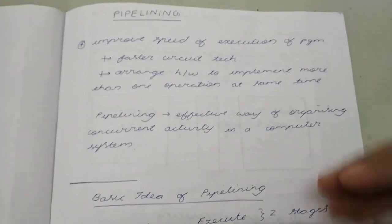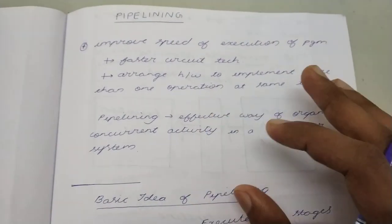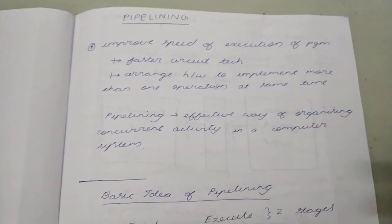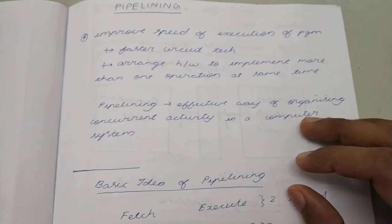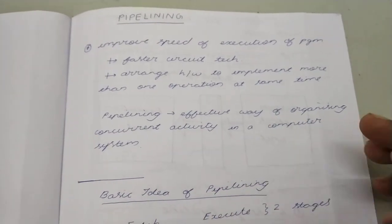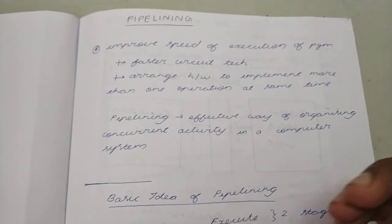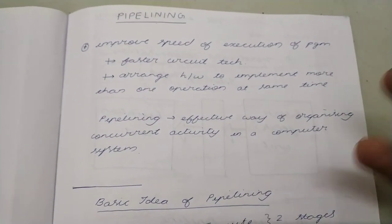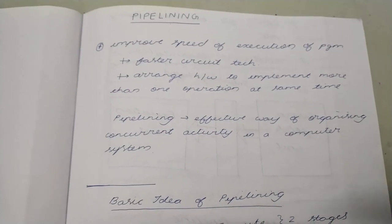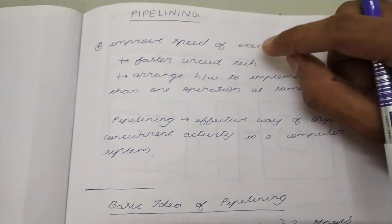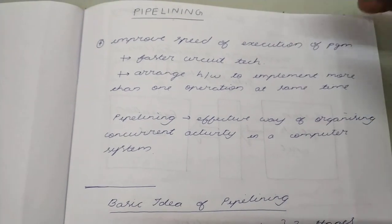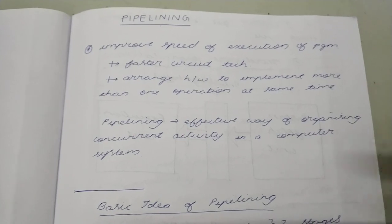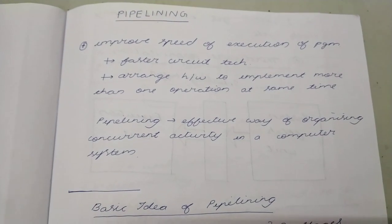That means we parallelize the different components inside the hardware. So when that happens, more instructions can be executed at the same time. Pipelining is basically an effective way of organizing the concurrent activity in the computer system — getting more instructions done in the same time without using faster circuit technology, using the same hardware itself arranged in such a way that we can get more instructions done at the same time.